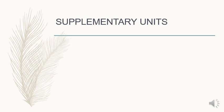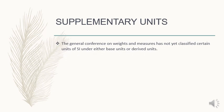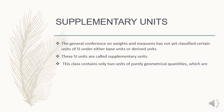Now moving towards another unit system which is known as supplementary units. These units are not placed in derived units or in base units, so we place them separately as supplementary units. The general conference on weights and measures has not yet classified certain units of SI under either base units or derived units. These SI units are called supplementary units. This class contains only two units of purely geometrical quantities which are plane angle and solid angle.